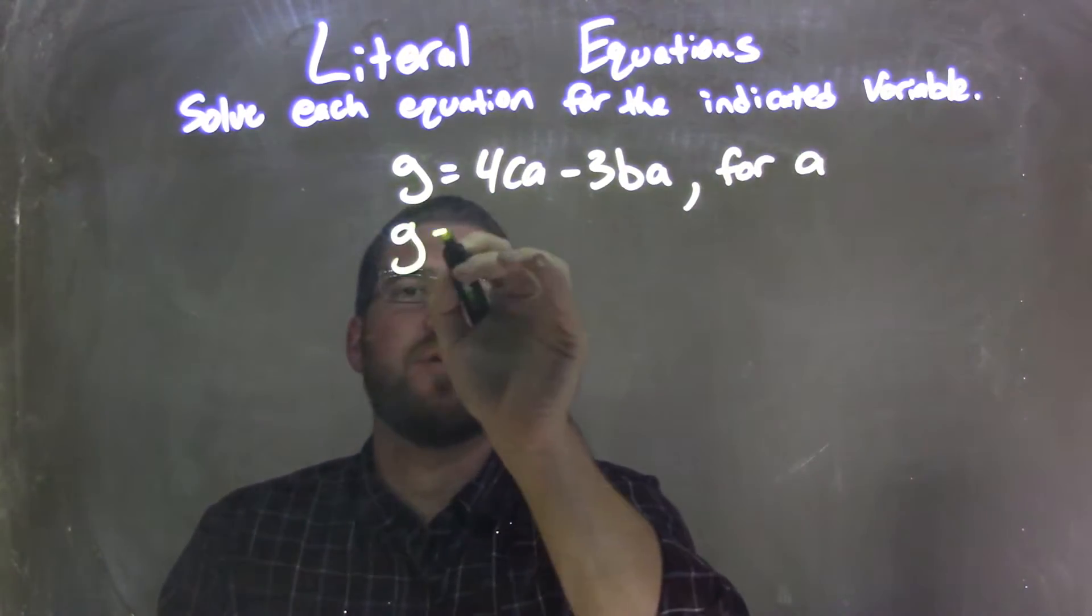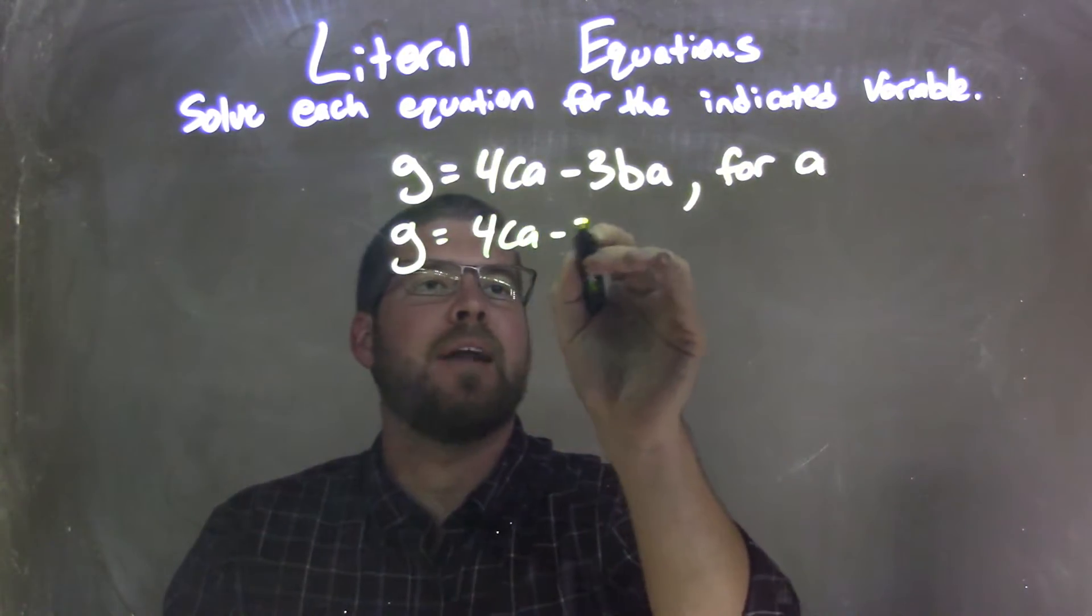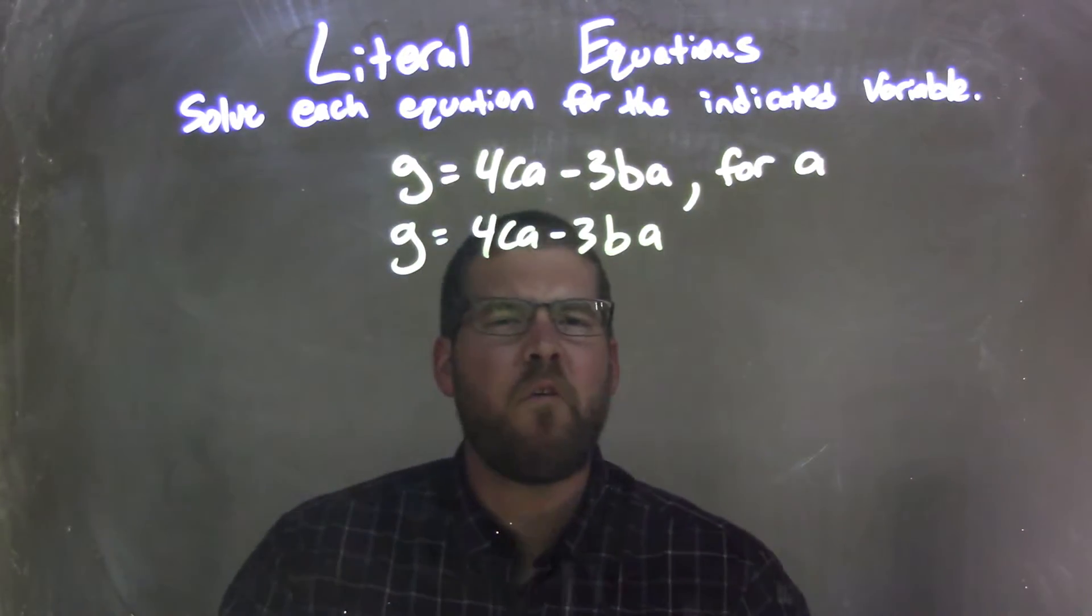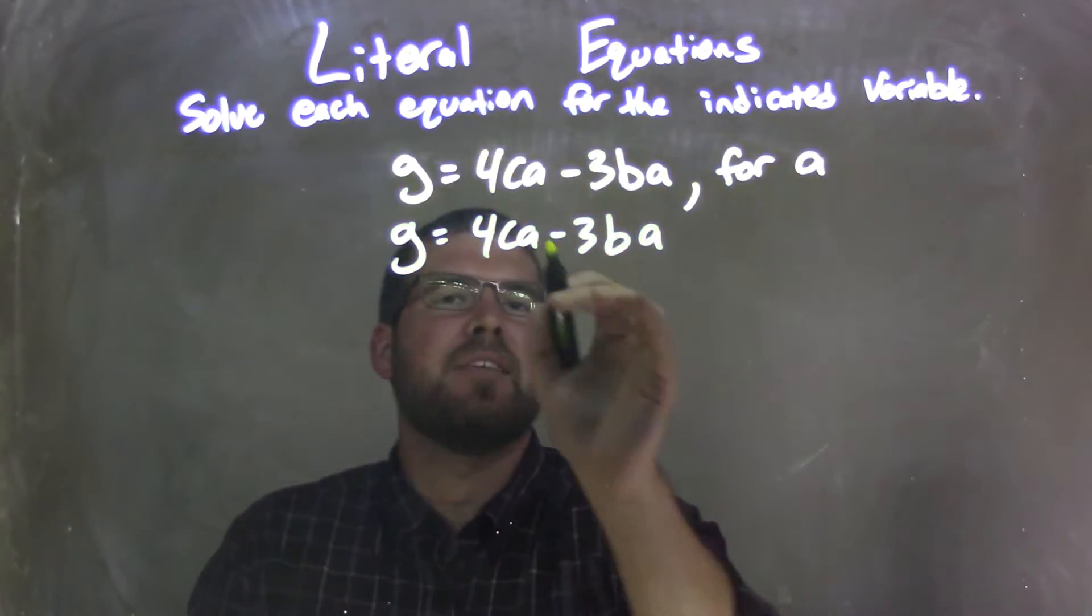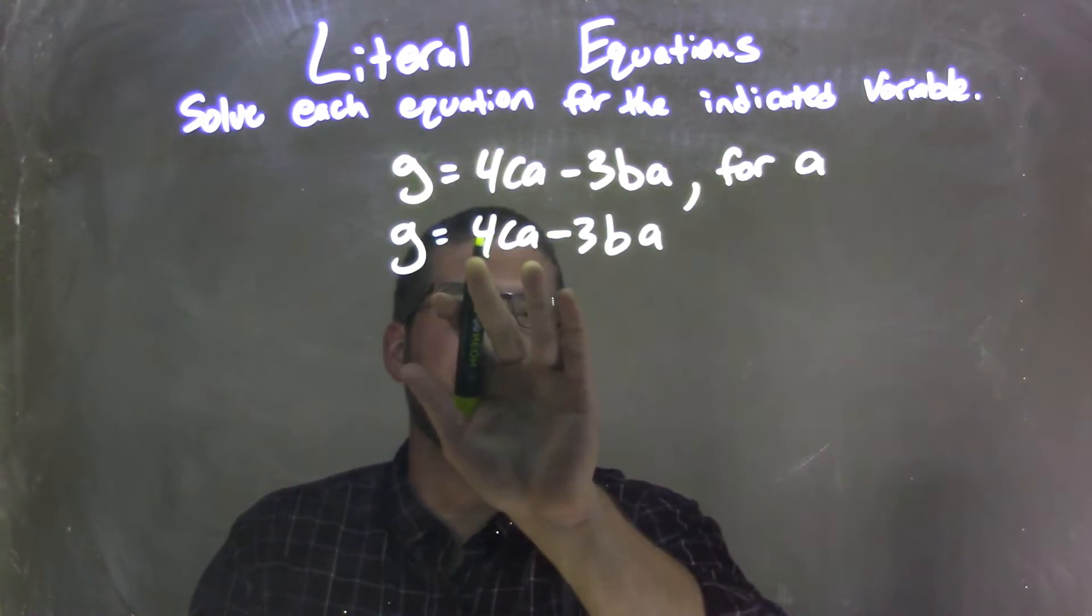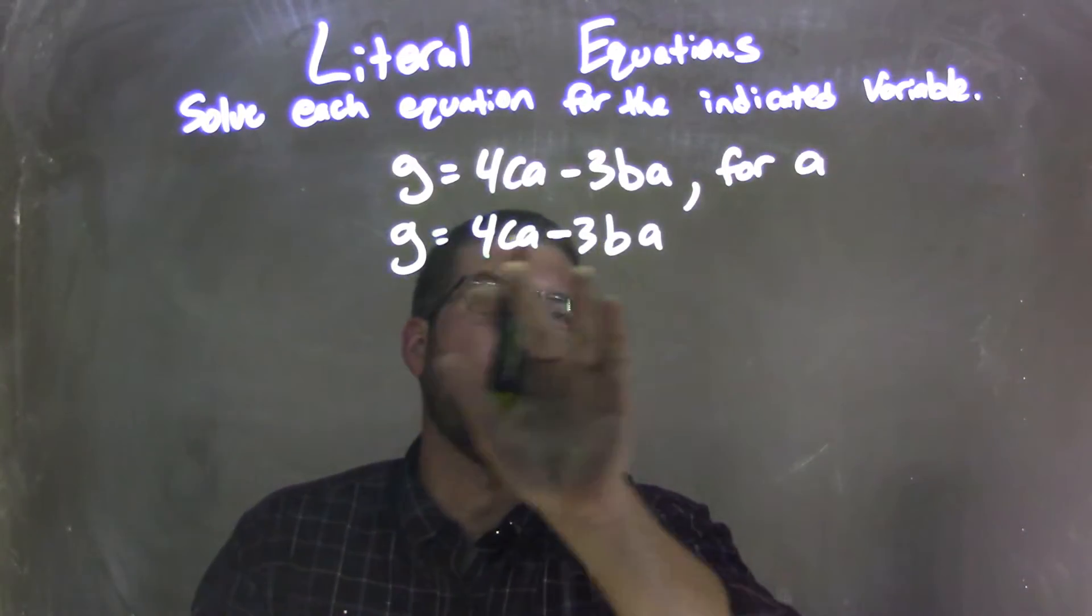So I'm going to rewrite my equation here, so I have some room, 4CA minus 3BA. So what I want to do, this is fairly quick and simple, is I see there's an A in both parts here, and it's subtracted by subtraction, so I kind of break this out of two parts there.